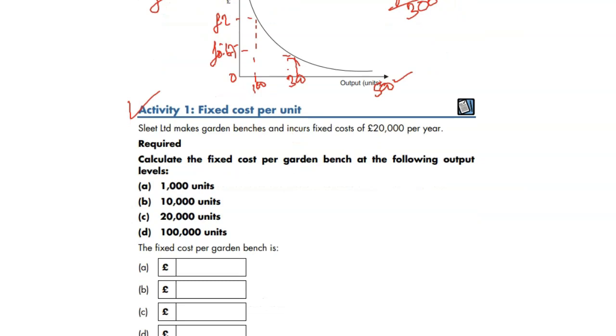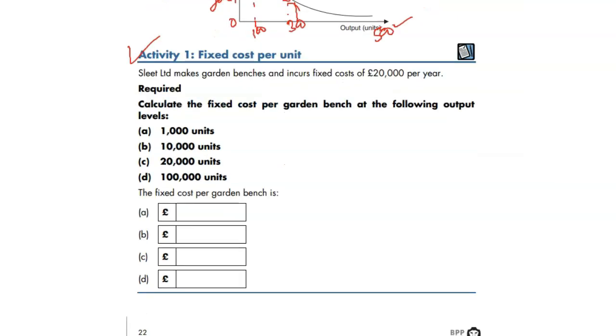Activity one, fixed cost per unit. Sleet Limited makes garden benches and incurs fixed costs of 20,000 per year. Calculate the fixed cost per garden bench at the following output levels.